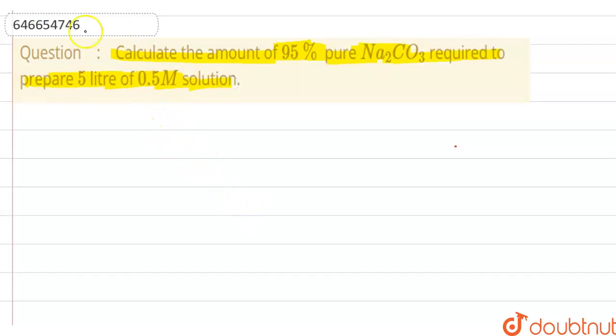How to solve this question? We have to find the number of moles in 5 liters of 0.5 molar. So number of moles is equal to 5 liters of 0.5 molar, which equals 0.5 into 5, that is equal to 2.5 moles.